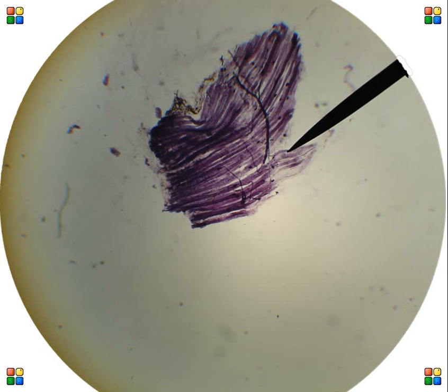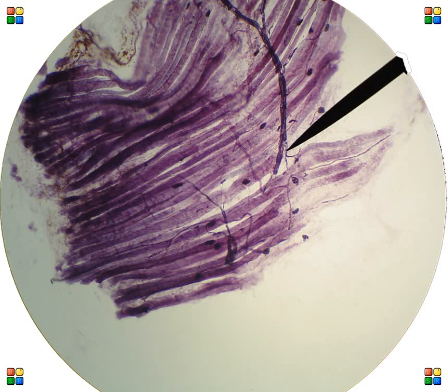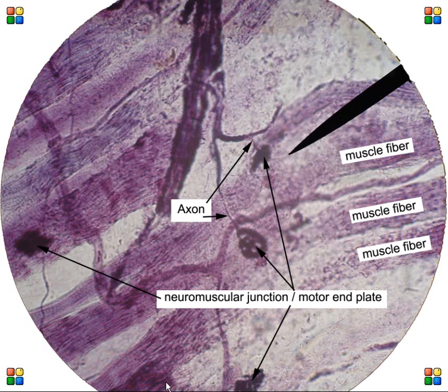Again, with the slides showing the same basic thing but from a different company, so the staining is different. Neuromuscular junction, axon to a motor neuron. Let's go to a high magnification label and you can see again, neuromuscular junction, axon and so on.